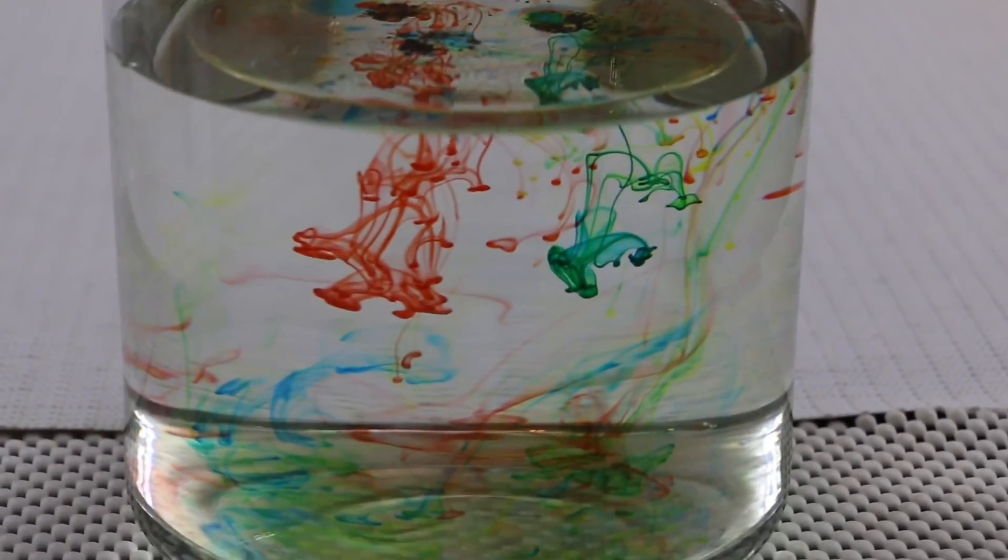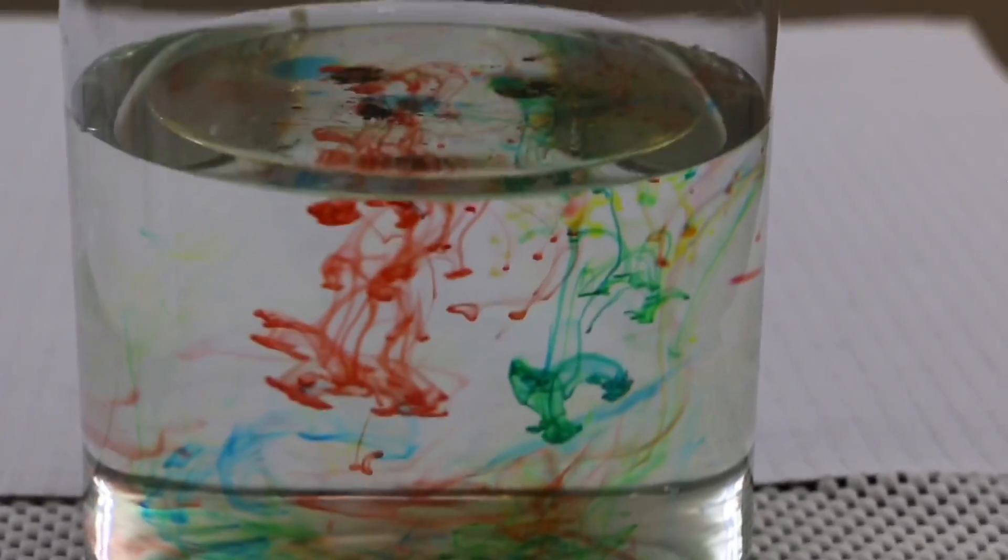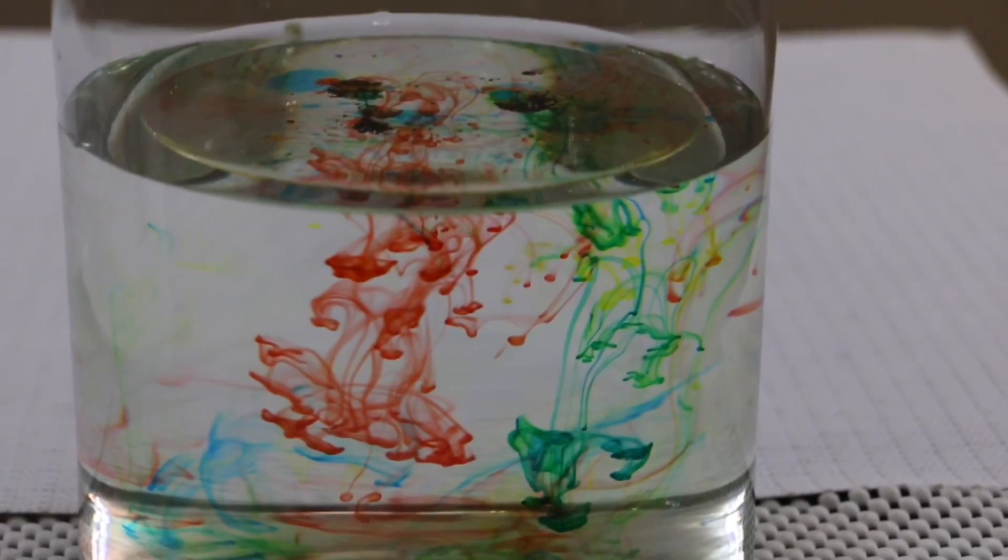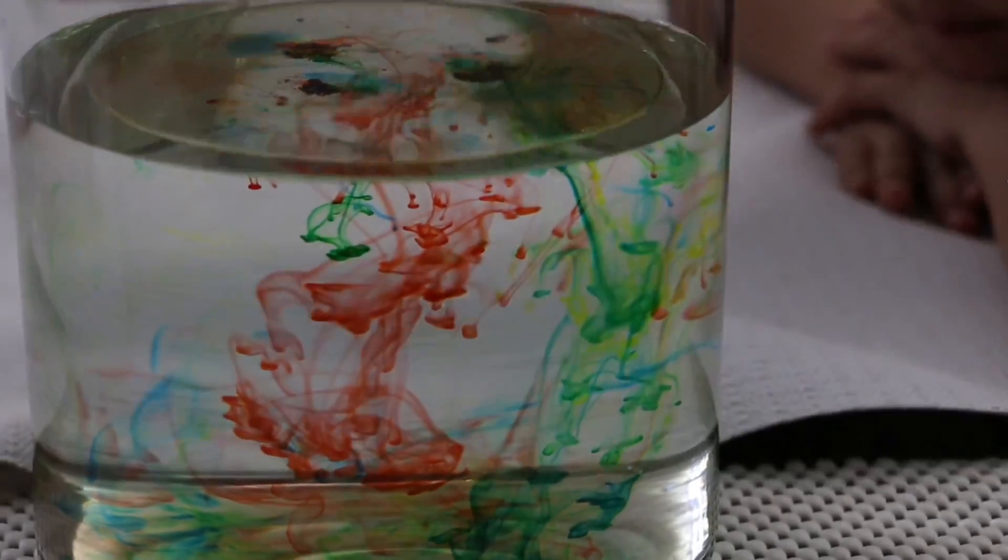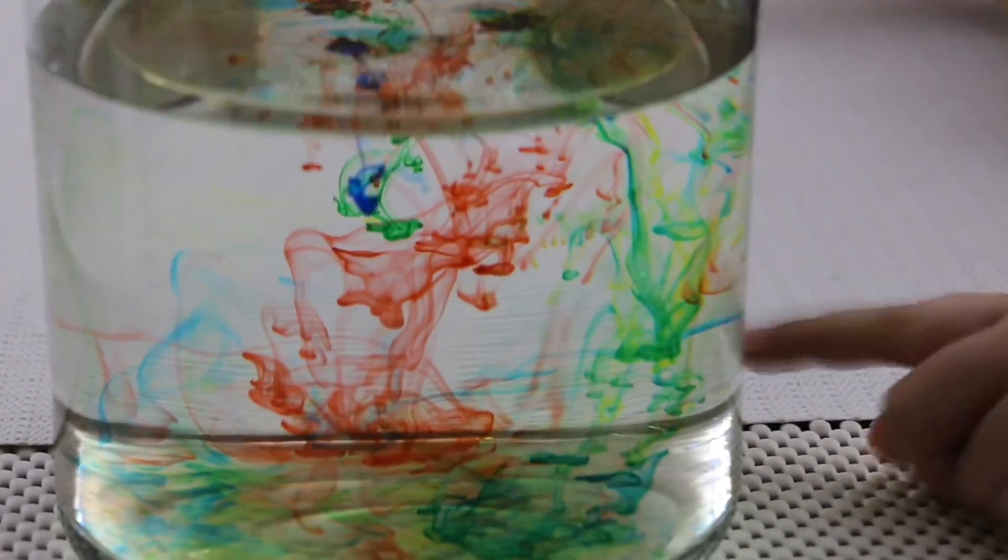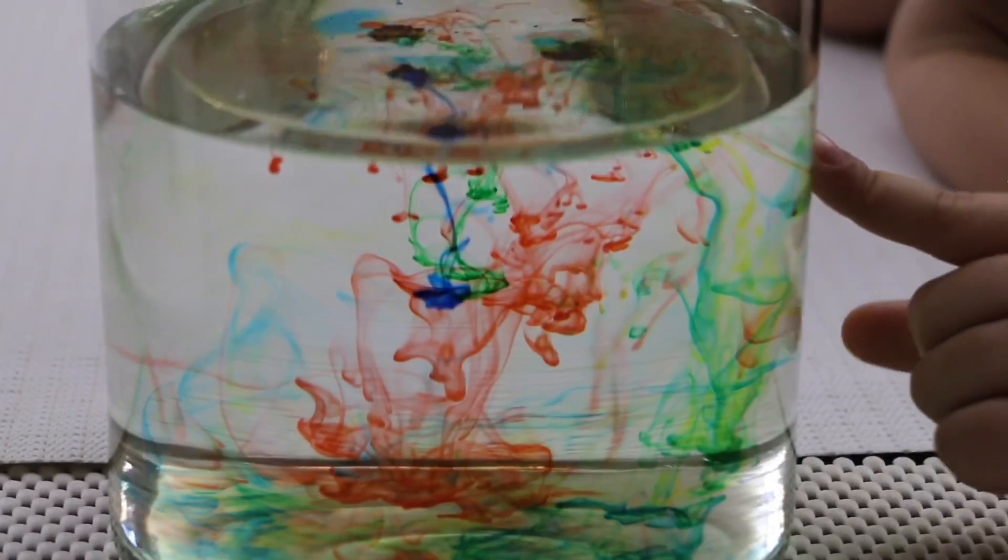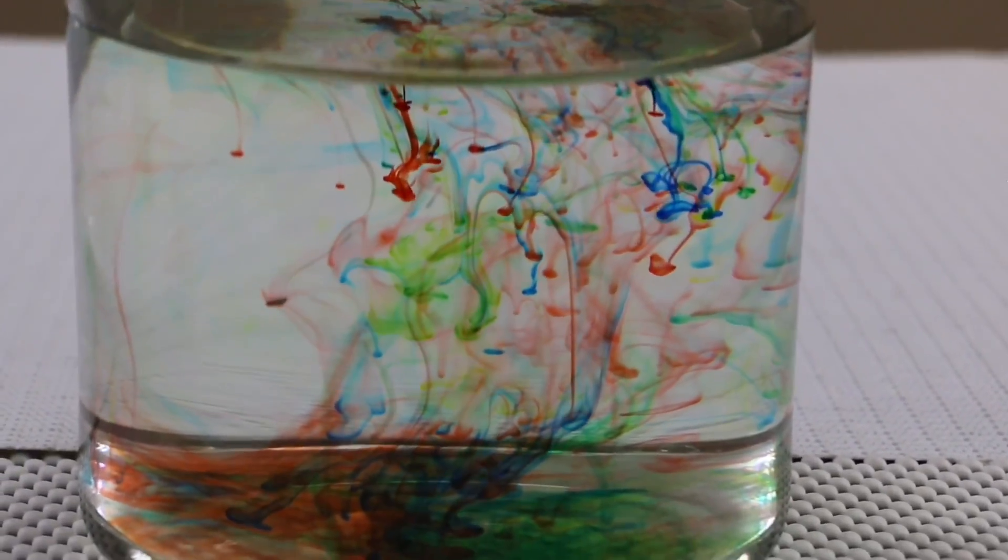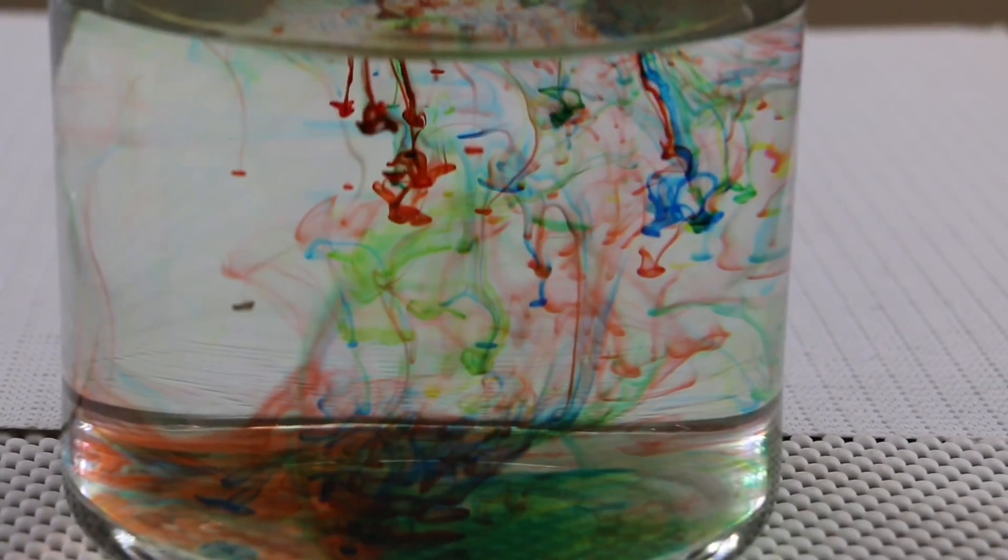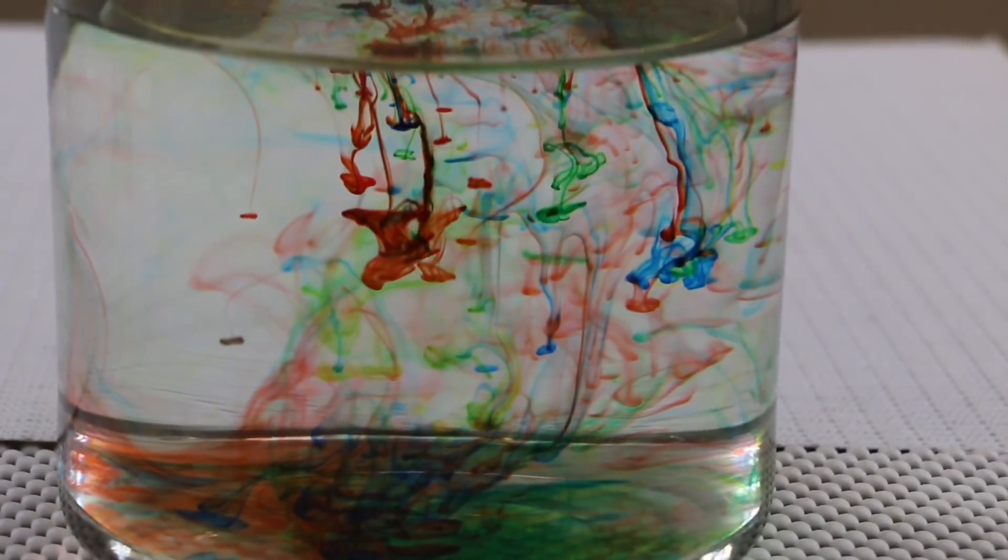Look at the beautiful strings of colors coming down to the bottom of the jar. It's because the vegetable oil has lower density than water. It will stay on the top surface. But the colors are water-based, so they'll keep moving down and try to mix with water.